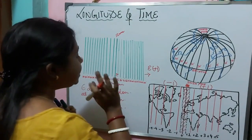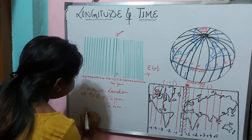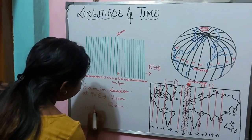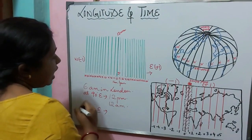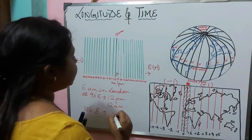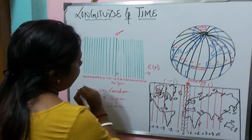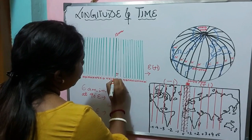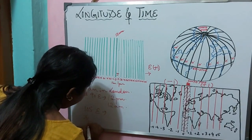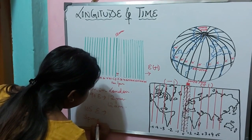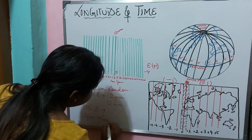Now, what will be the time at 105 degrees east if it is 3 pm in Greenwich?